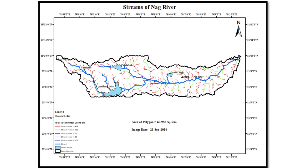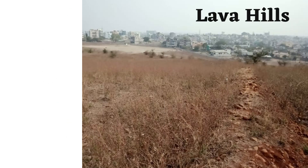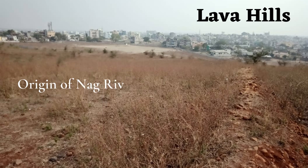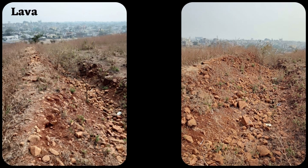From the map, it can be seen that Ambazari and Futala Lake are continuously fed by streams coming from Lava Hills, showing that Nag River originates from Lava Hills and merges with these lakes. The two major streams from Ambazari and Futala Lake meet at Yashvant Stadium and flow as Nag River up to Pavangaon. As per the District Gazetteer 1908, the origin of Nag River is mentioned from Lava Hills. We visited Lava Hills and observed that various streams originate and flow downstream within Nagpur city.